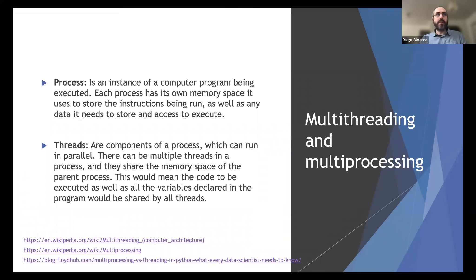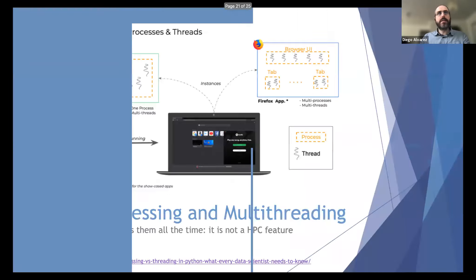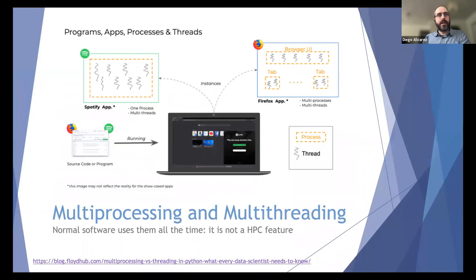Multi-threading and multi-processing: a process is one instance of the application. Within a process you may have several threads that share the same memory space — the same variables and objects — executed in parallel, using the same processor resources as the parent process. The example shown is Spotify: one process with multiple threads inside. You might also have a parent process spawning child processes — like a browser where each tab is a separate process, and within each process there are multiple threads.